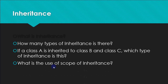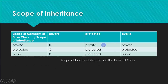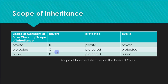Another important concept is the scope of inheritance. When you inherit one class into another, you write the scope of inheritance — private, protected, or public — in front of the class name. This determines what is accessible in the derived class. Private members of the base class cannot be accessed in the derived class regardless of which inheritance scope is used.